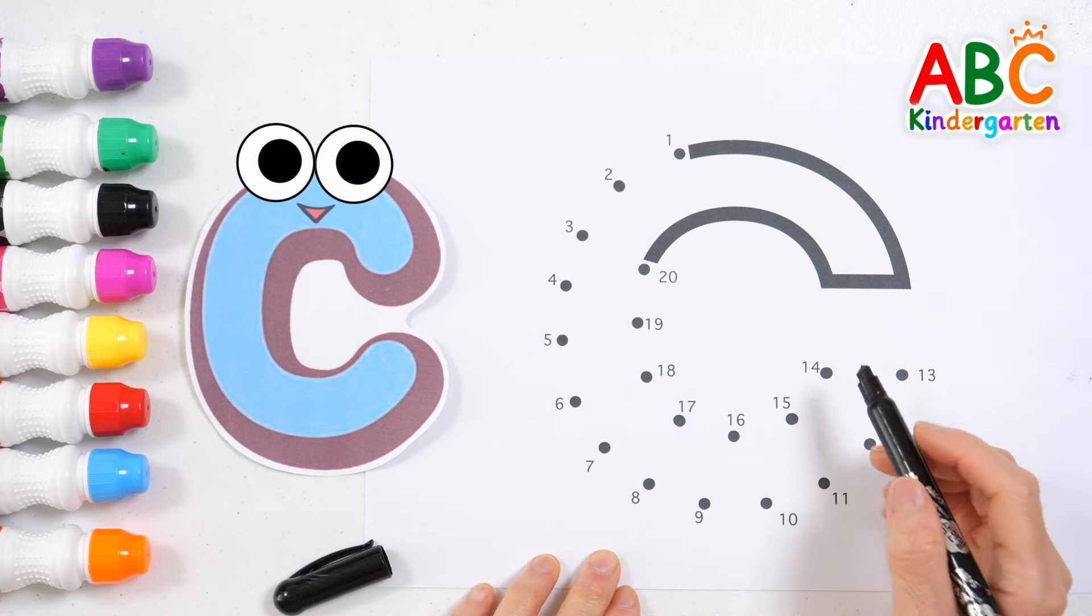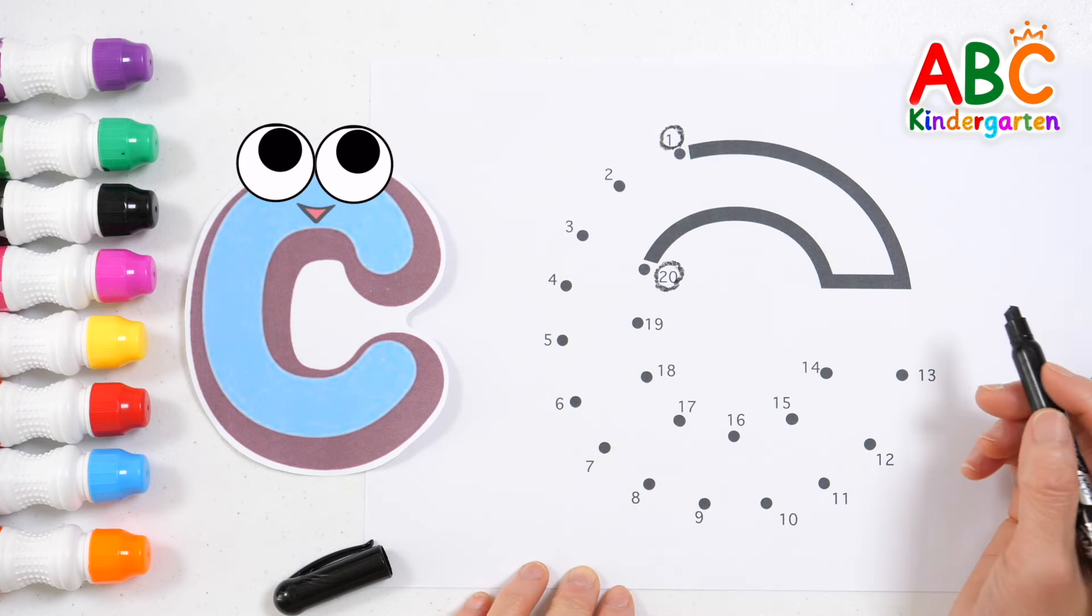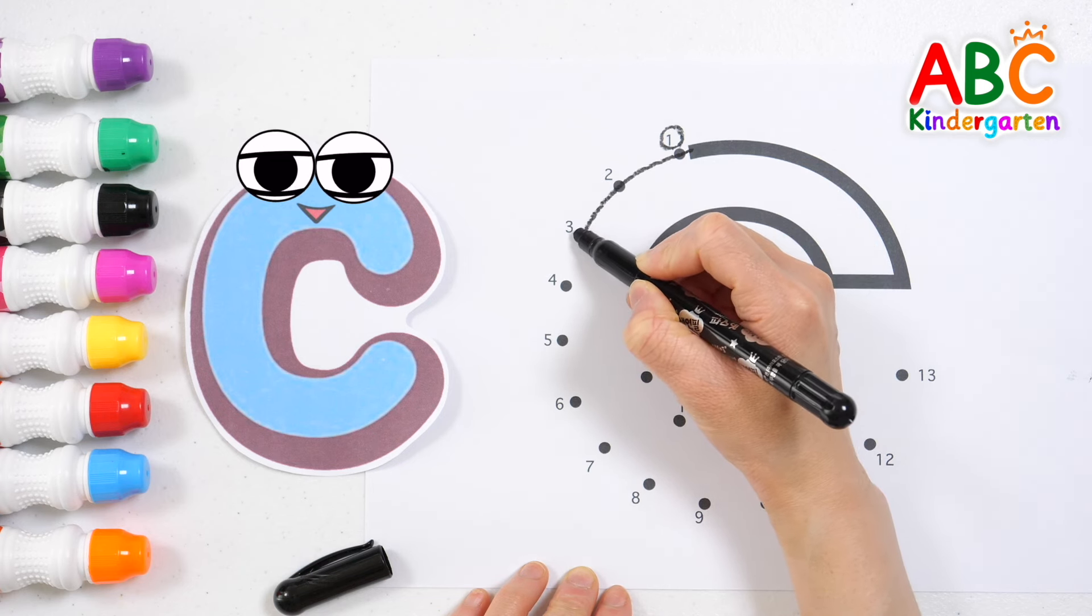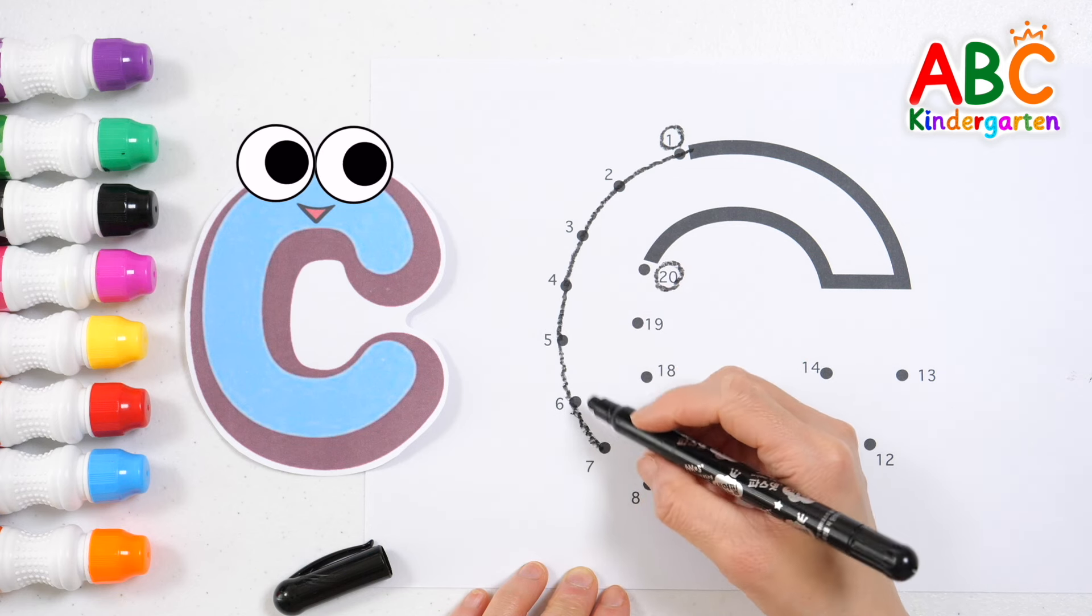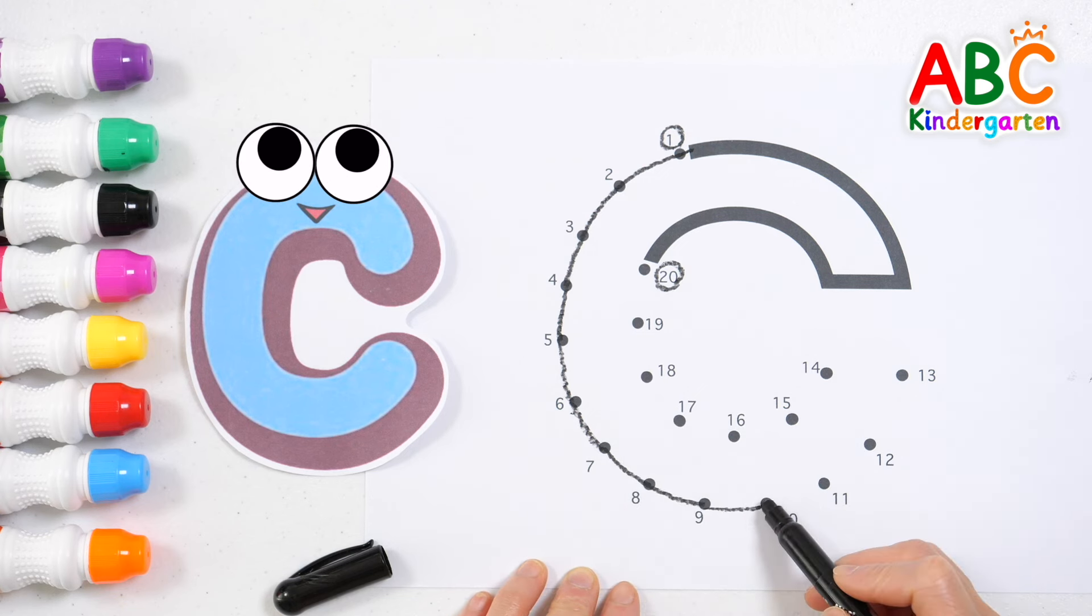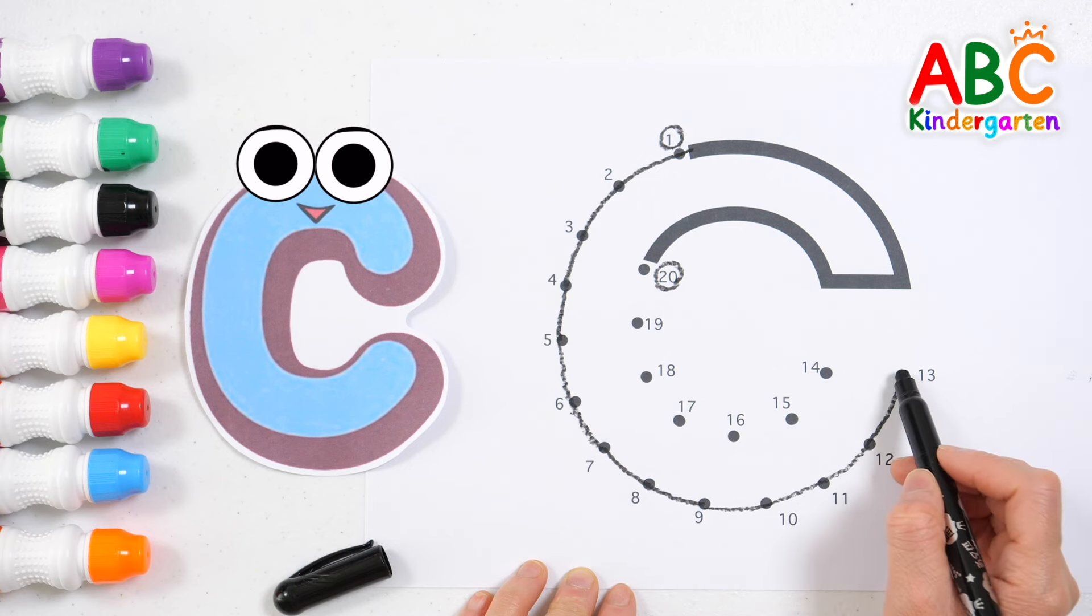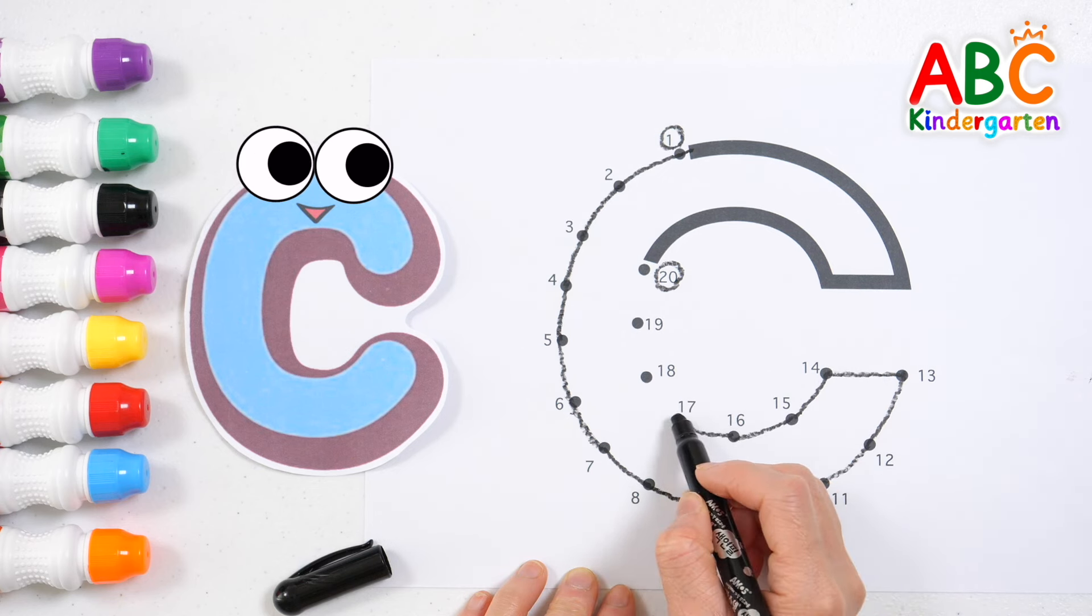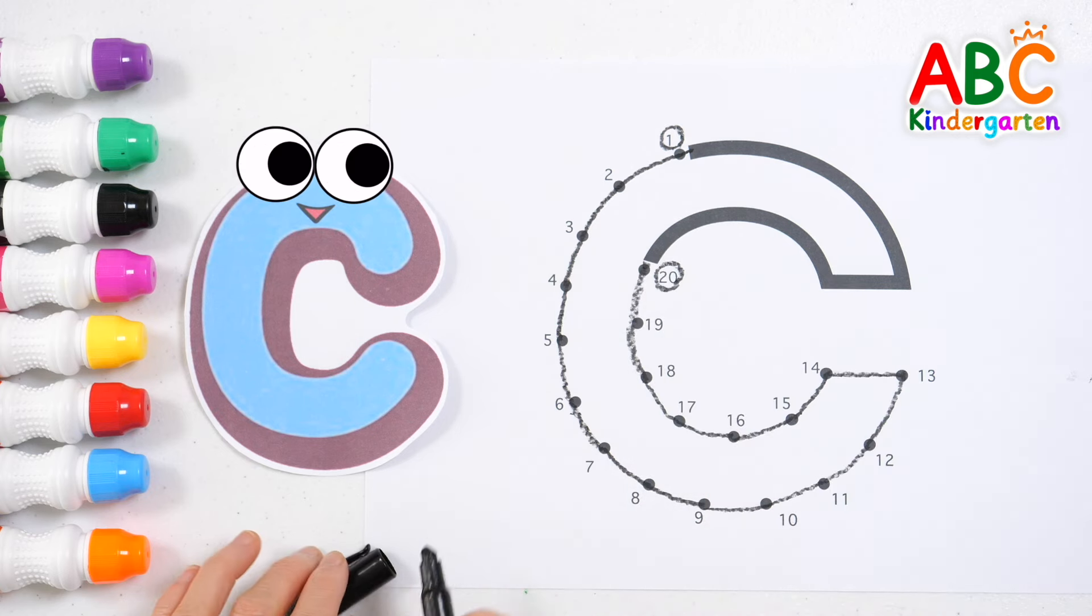Let's make the letter C by connecting the numbers 1 to 20 in order. 1, 2, 3, 4, 5, 6, 7, 8, 9, 10, 11, 12, 13, 14, 15, 16, 17, 18, 19, 20. Great job!